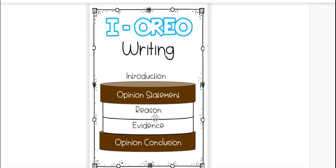Our opinion writing is going to have one, two, three, four, five parts. Our first part is our introduction, to teach our readers what we'll be writing about and what book we're talking about. The next sentence will be our opinion statement. This is where we share with our readers what we think. It's really important that good writers use strong words to describe what they think in their writing.